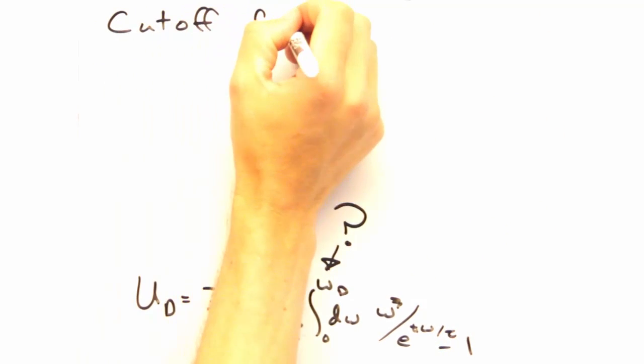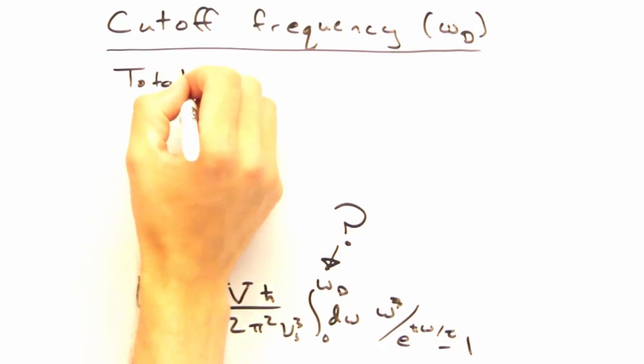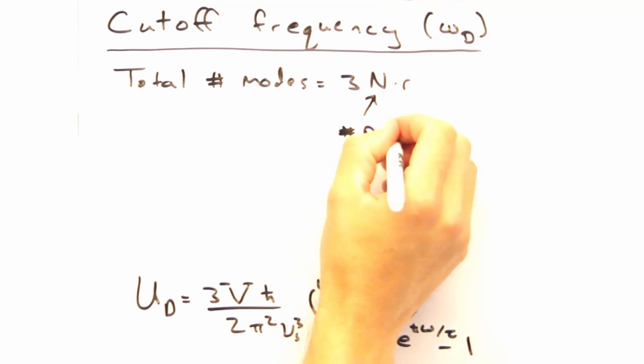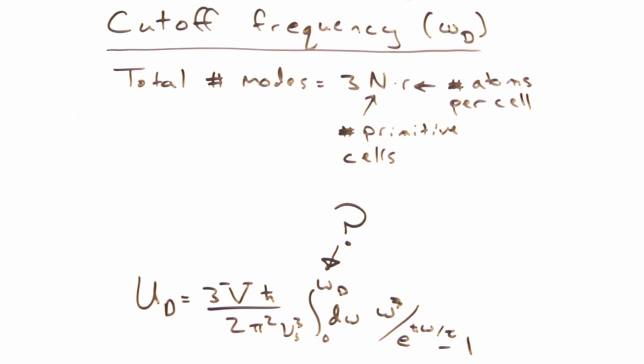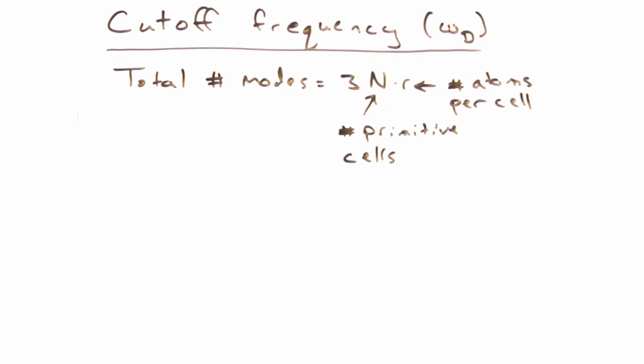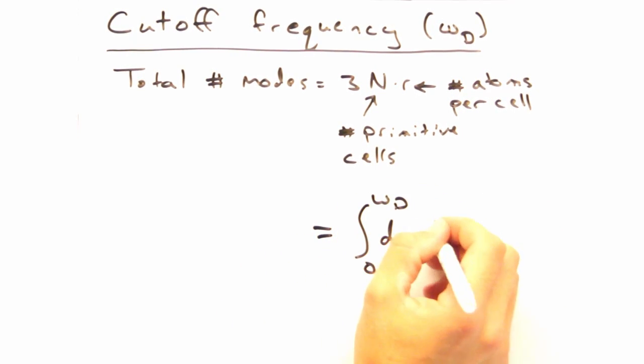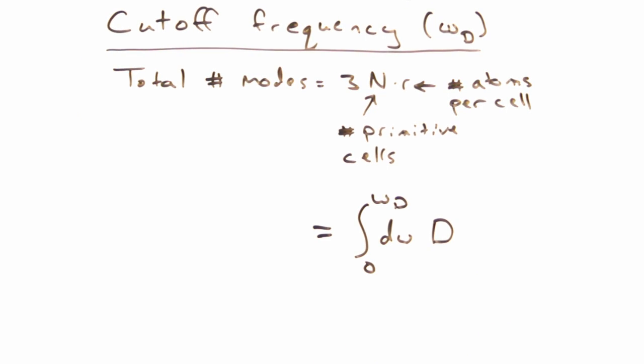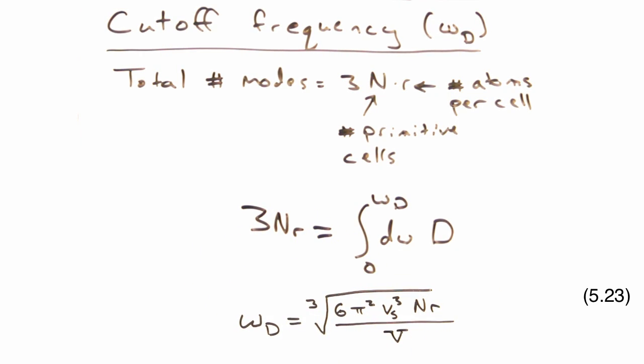But we're missing what our cutoff frequency is. Yeah, so we can figure that out by looking at the total number of modes in the system. We have two transverse and one longitudinal mode per atom, n cells, and then r atoms per cell. But we can also figure out the total number of modes by integrating over the density of states up to this cutoff frequency. And since we know the density of states, the integral is fairly trivial. Setting that equal to 3nr, we get an expression for the omega cutoff that looks like this.